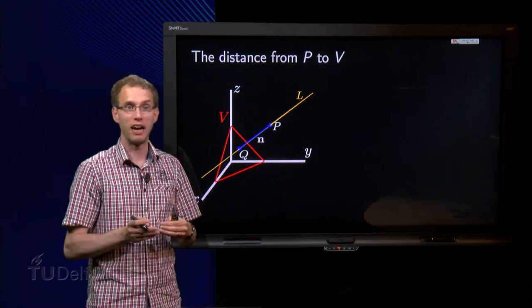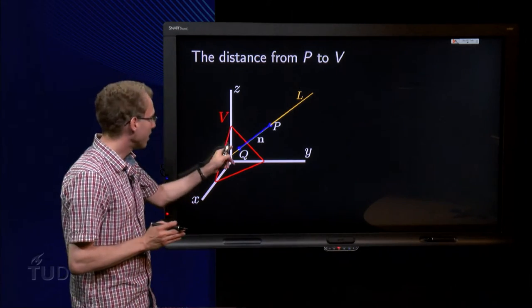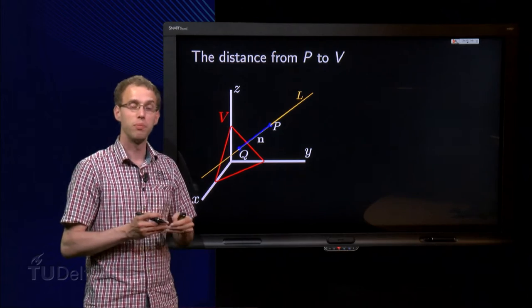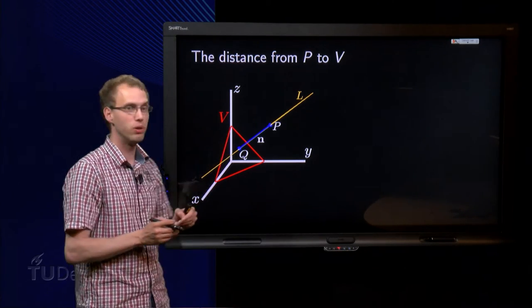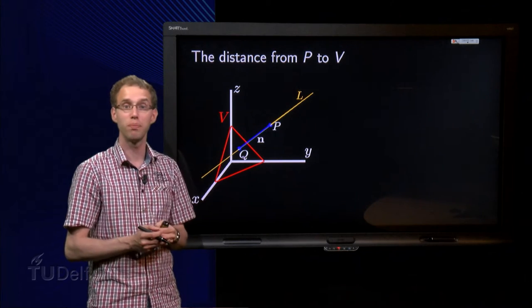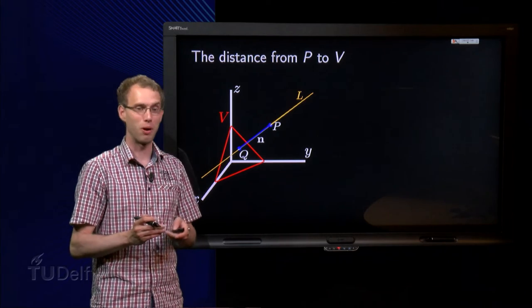So the problem now is to find first the line L, and then find the point Q, because if we have the point Q, then we can compute the distance from P to V, which is the same as the distance from P to Q. So that's the program, quite a long program, right?